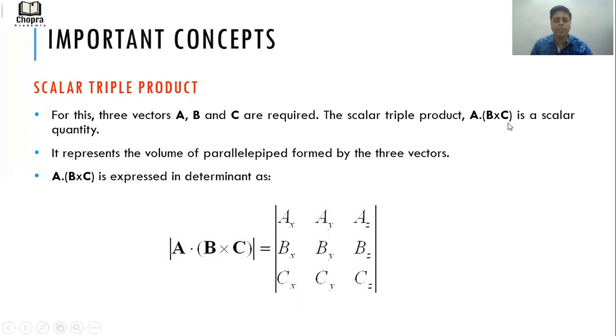A·(B×C) in terms of determinant is expressed as: we just replace î, ĵ, k̂ here and we put Ax, Ay, Az; Bx, By, Bz; Cx, Cy, Cz. So again, we open it up in the same fashion as we did earlier.